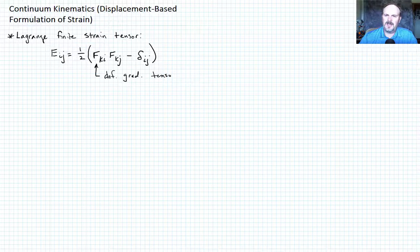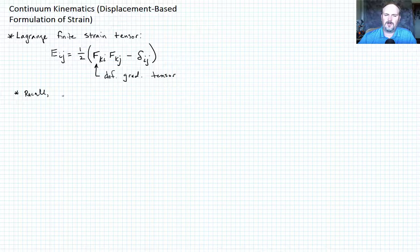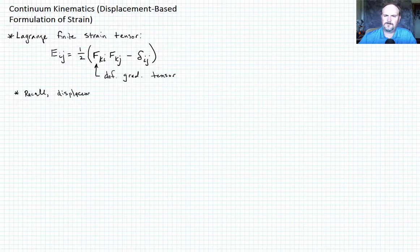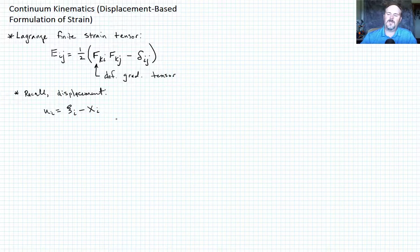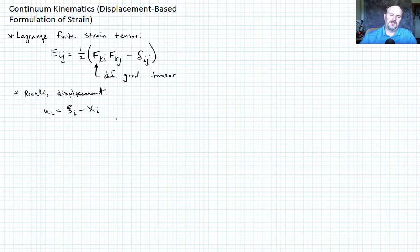And sometimes it's not convenient to work in that tensor, so we sometimes like to write this in terms of displacement. So recall, how do we define displacement? Displacement is given by u_i equals x_i minus X_i, and we want to figure out a way to relate displacement now to the deformation gradient tensor.